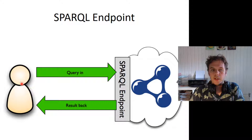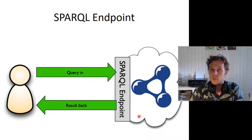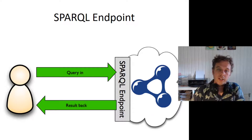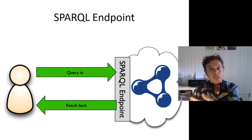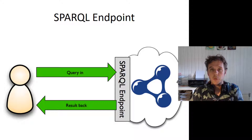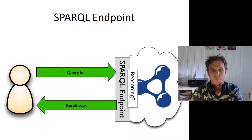Here's how it works: you send a query to the SPARQL endpoint, and then there's a triple store behind it that does some calculations and sends the results back to you over the web. The green arrows in the diagram represent HTTP requests.